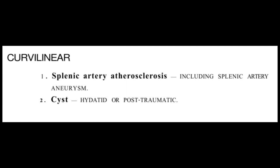Another particular pattern is curvilinear calcification, seen in two main conditions. The first is cysts — either post-traumatic cysts or hydatid disease — both of which can produce curvilinear calcification within the spleen. The second condition is splenic artery atherosclerosis, seen especially in elderly patients, and this also includes splenic artery aneurysm. This vascular pattern is typically seen in elderly patients.